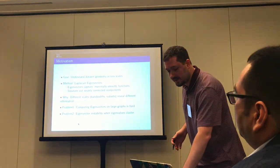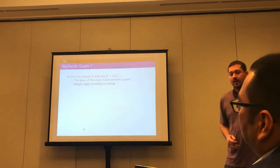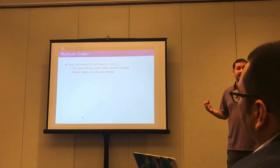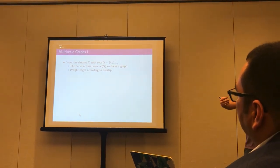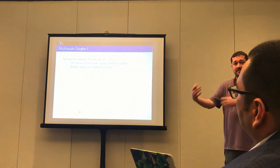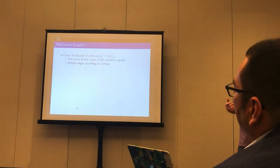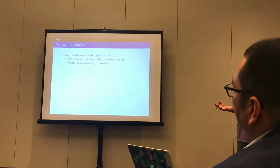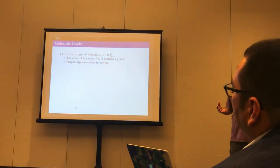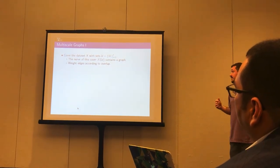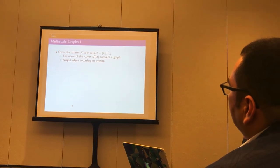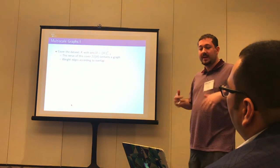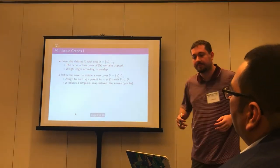The first question is how to build these multi-scale graphs. Starting with a single dataset, it is examined in different snapshots going from very coarse to much finer viewpoints. This is a very typical thing to do with topological spaces — cover the dataset with a bunch of sets, then look at the nerve of this cover, drawing edges whenever two subsets intersect. Edges are weighted according to how much they overlap.